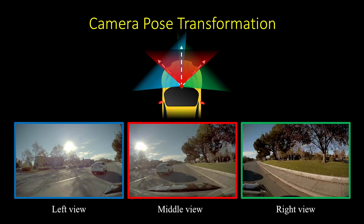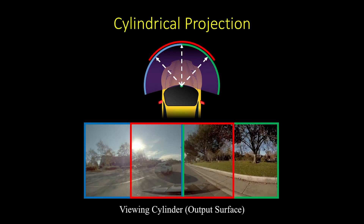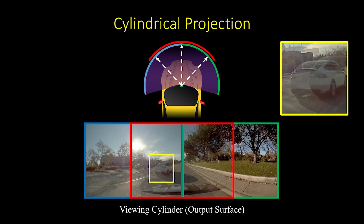Then, we project three input views onto a common viewing cylinder through a cylindrical projection. The input views are roughly aligned on the viewing cylinder. However, the local content may not be aligned well due to depth variation.